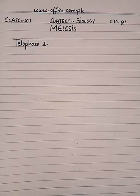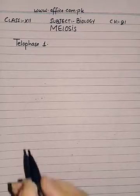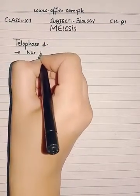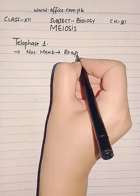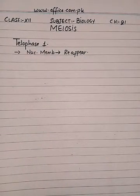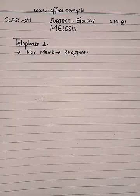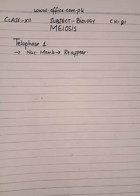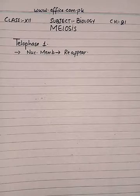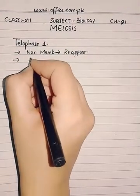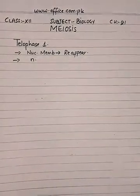Telophase one is the last phase. Here the nuclear membrane will reappear and it will be reorganized around each set of chromosomes. The number of chromosomes is halved, as in anaphase one, so separate nuclear membranes will be formed so that each cell will receive a proper nucleus. The nucleoli will reappear and two nuclei will be formed with half the number of chromosomes — chromosome number will be n, or half.